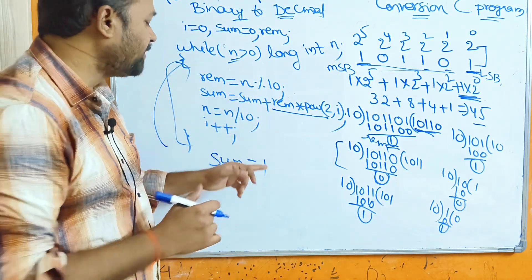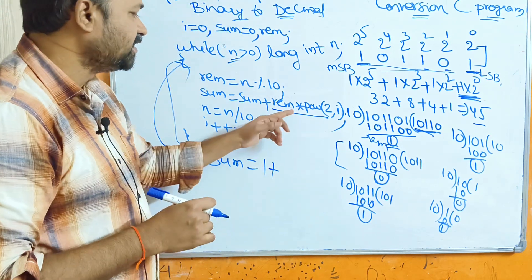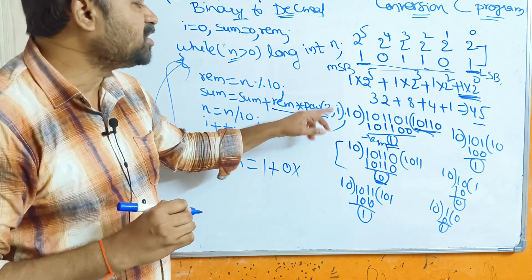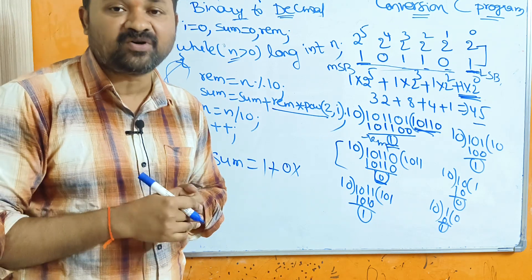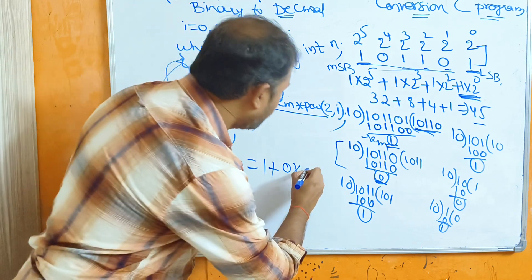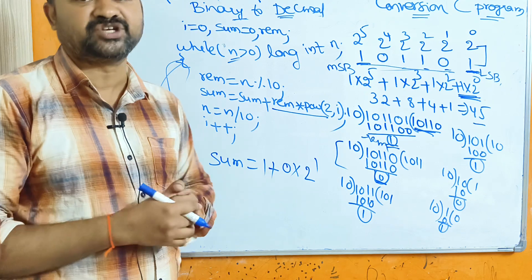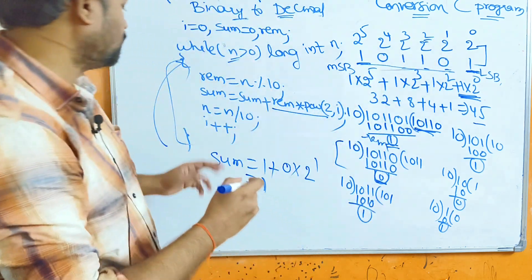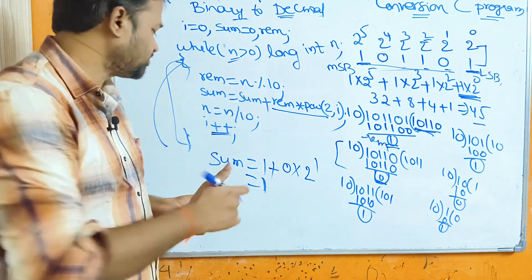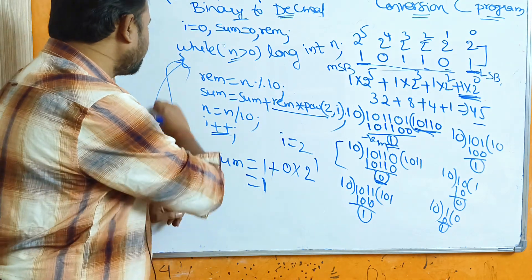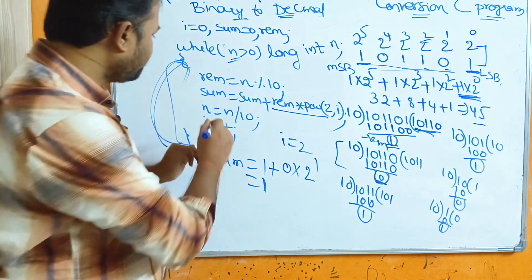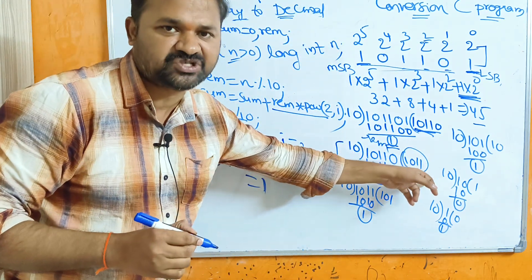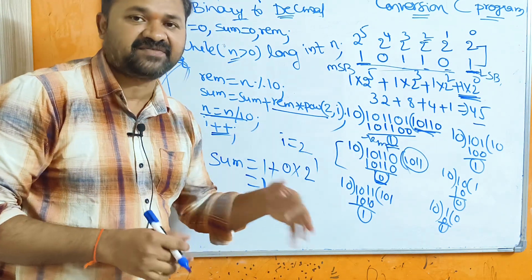So sum = 1 + 0 × pow(2, 1) = 1 + 0 = 1. After the second iteration sum is still 1. Then i becomes 2, n becomes 1011. In the third iteration, rem = 1011 % 10 = 1. So sum = 1 + 1 × pow(2, 2) = 1 + 4 = 5.